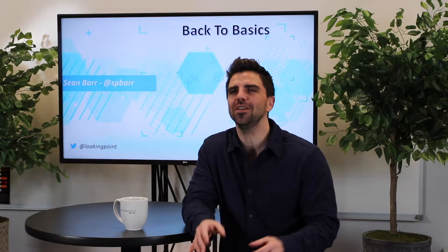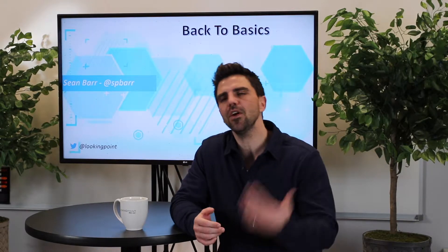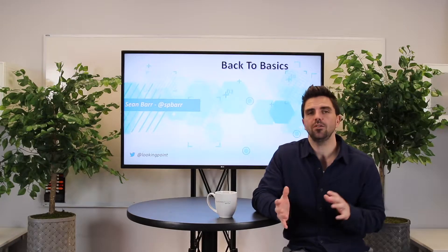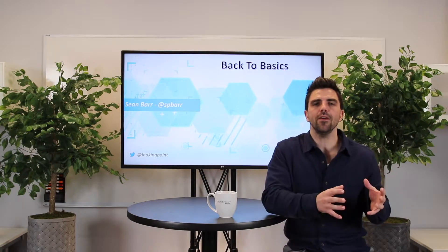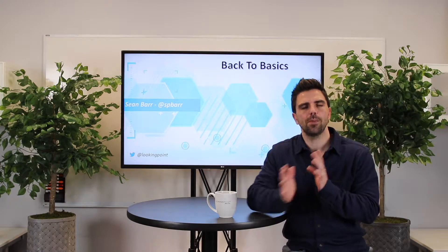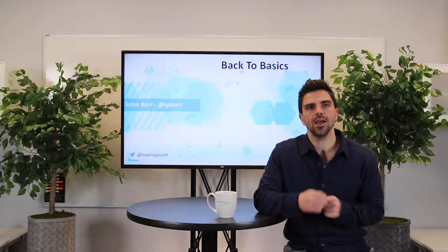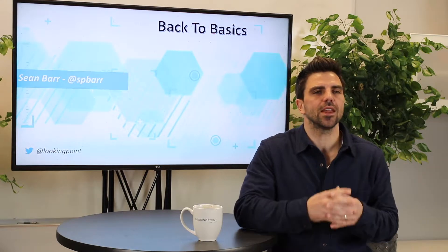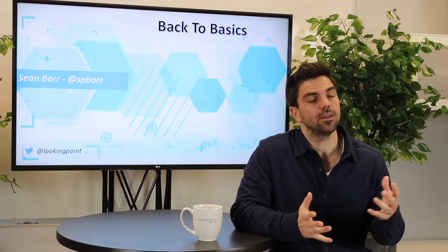We're back and we are talking components of a VPN — essentially all the components at a very high level involved in a VPN. So quick recap: what is a VPN? It's a virtual private network, or a private network over a public infrastructure. An example would be site A to site B over the internet — that's providing connectivity between those two networks, and that is a VPN.